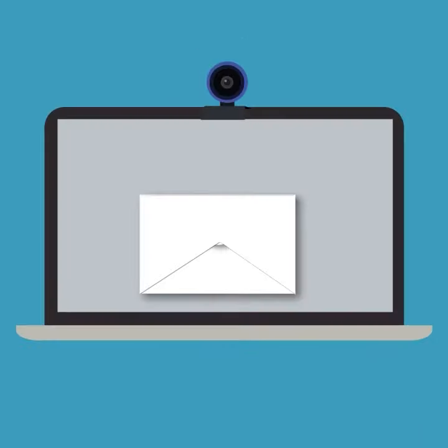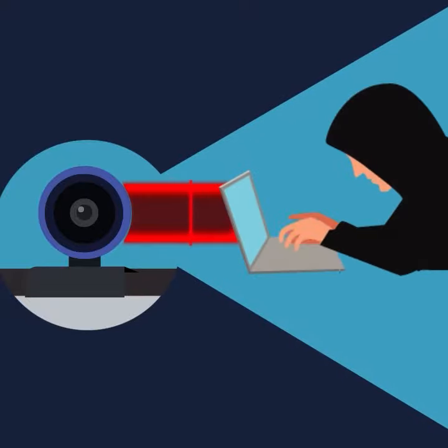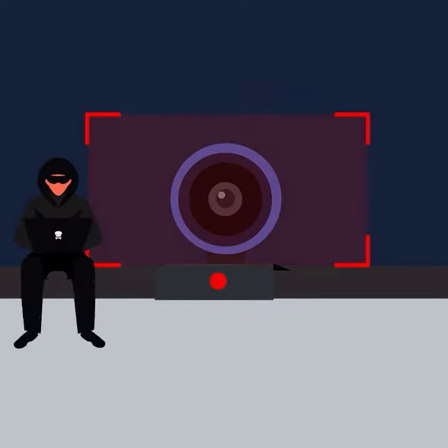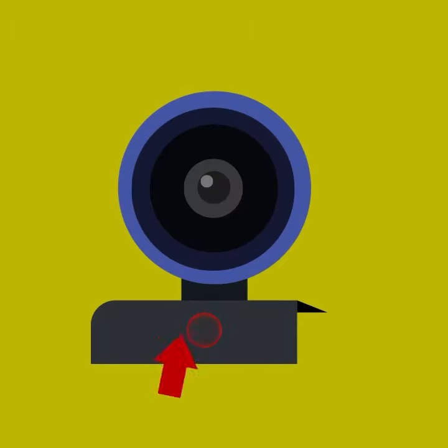When a fraudster hacks into a digital device using malware and remotely takes control of the webcam, it is known as camera hacking. The remotely activated webcam is used by the fraudster to capture pictures and record videos without the knowledge of the victim. Warning signs include the webcam light blinking even when it is not in use.